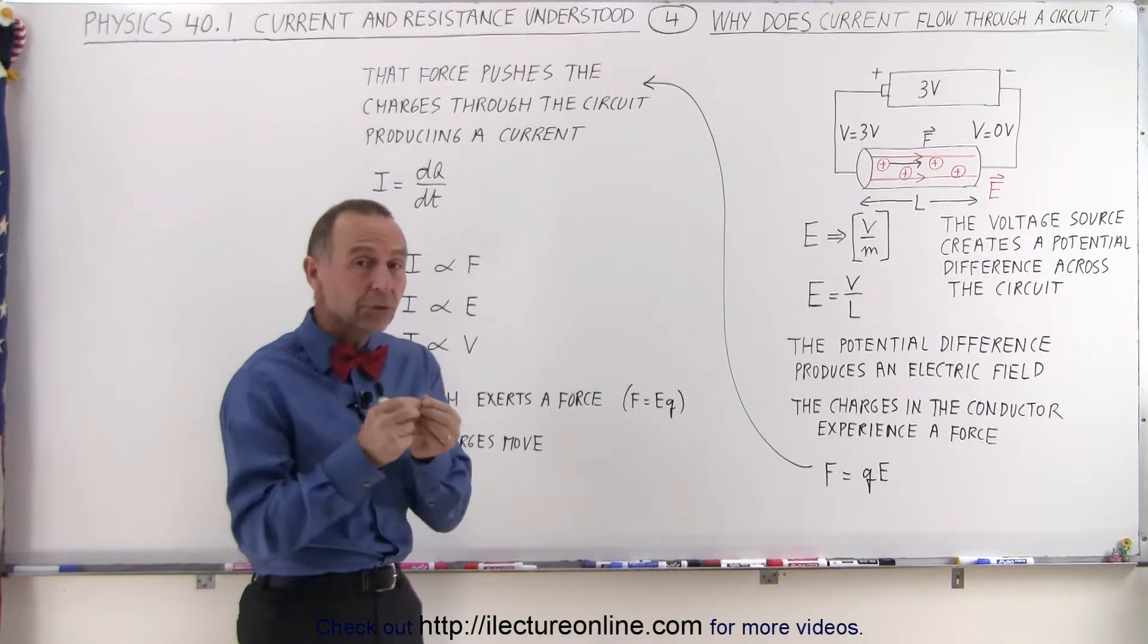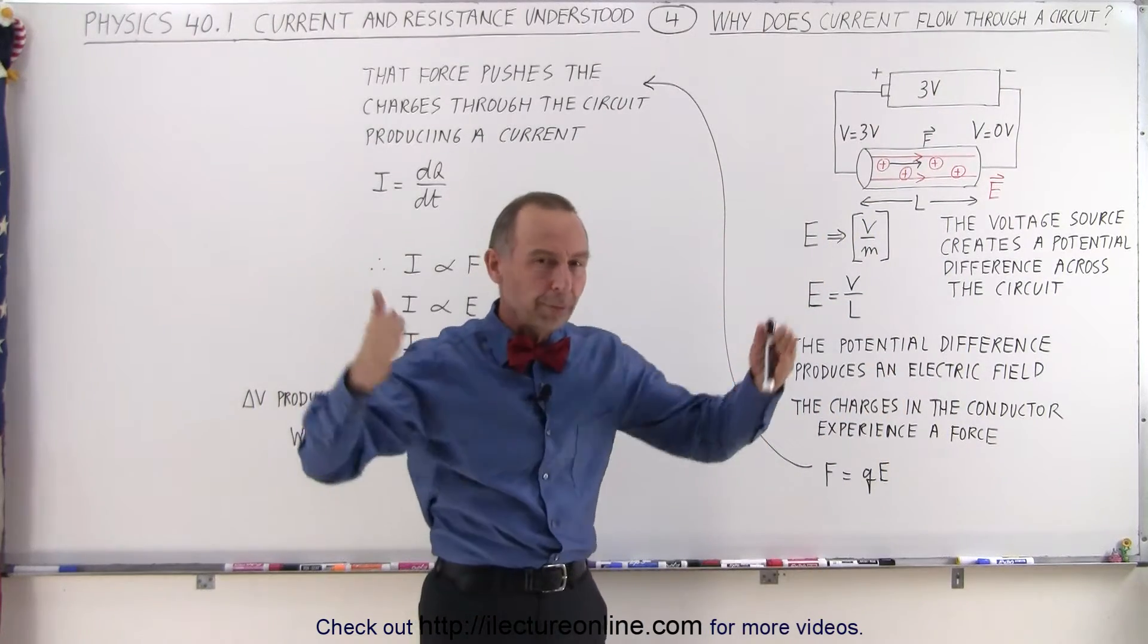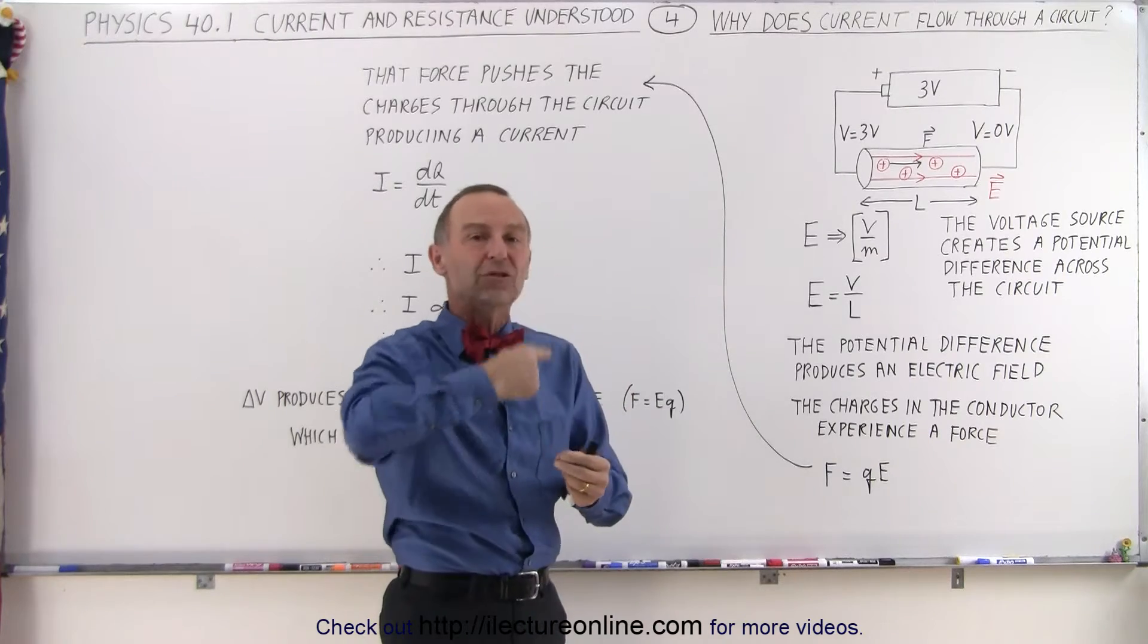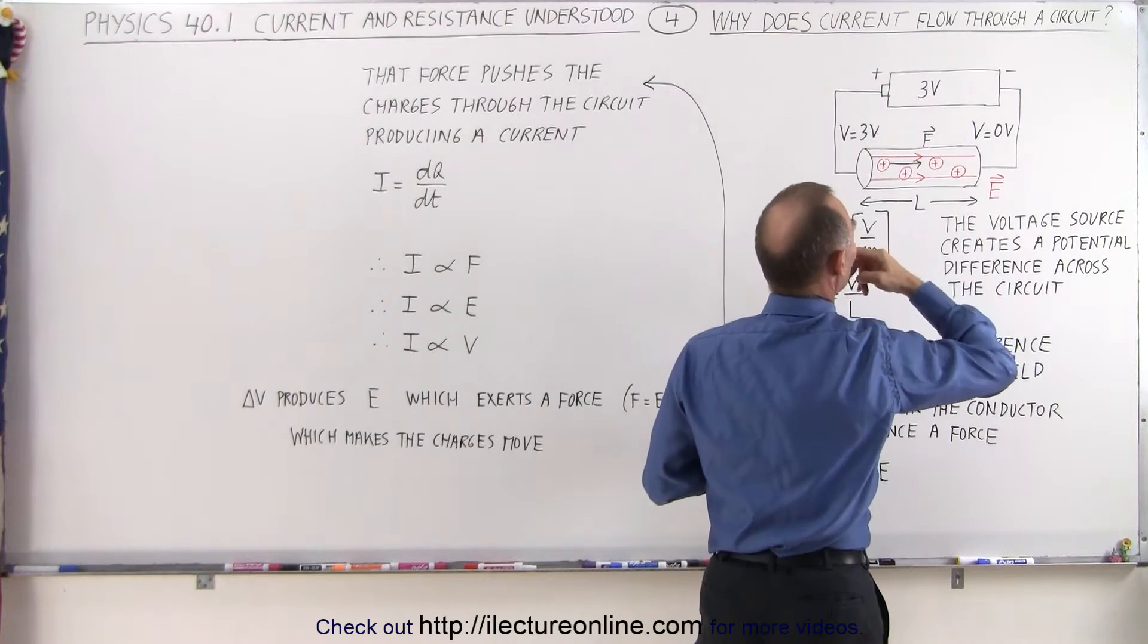Well, first of all, you need two things. You need a voltage supply, something that will produce a voltage or potential difference across the circuit. And then you need a complete circuit, a complete loop. No breaks anywhere in the loop, or current will not flow.